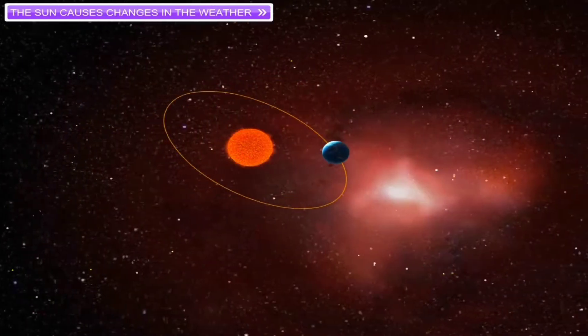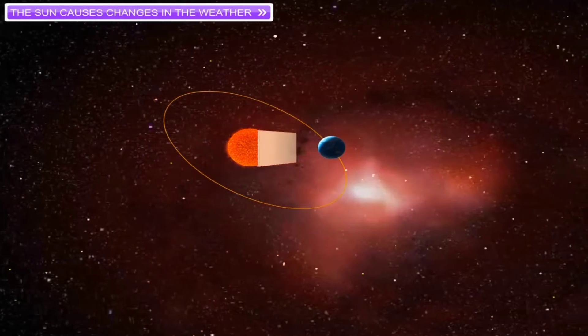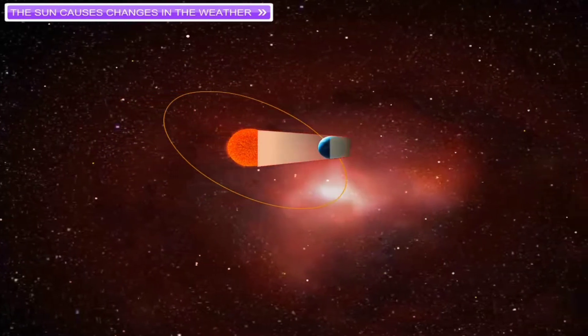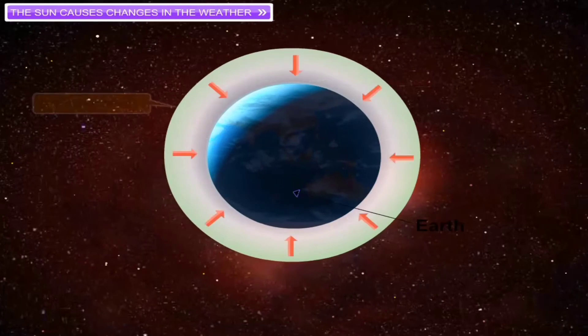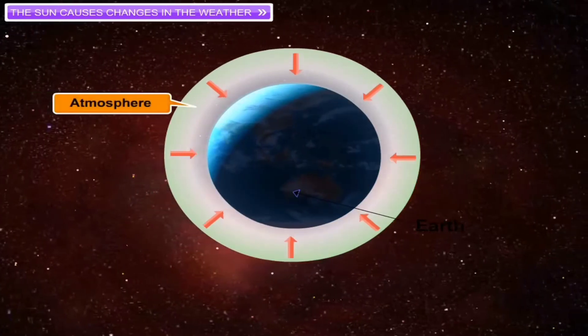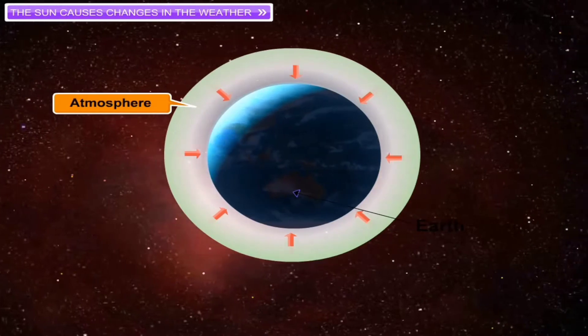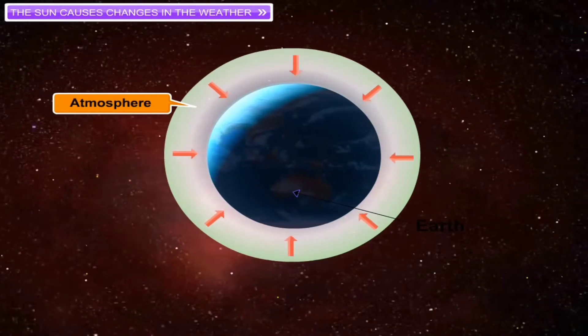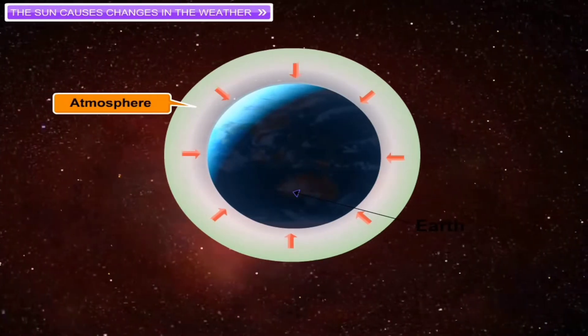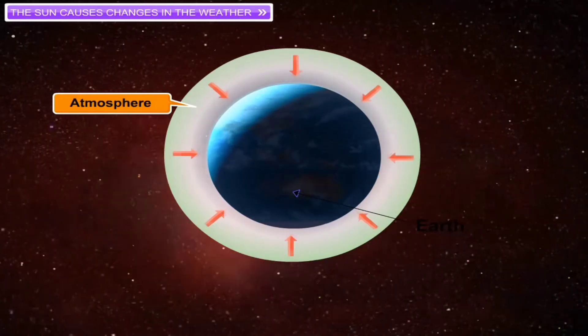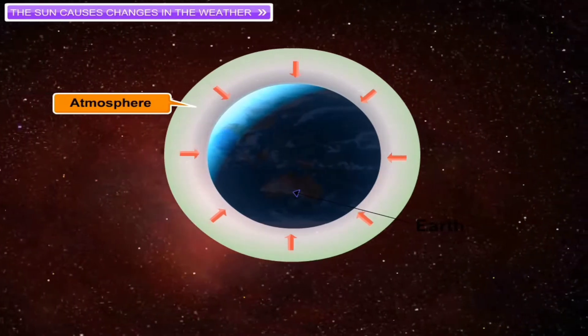Sun's heat absorbed and reflected by the earth's surface, oceans and the atmosphere. It plays an important role in determining the temperature at any place.